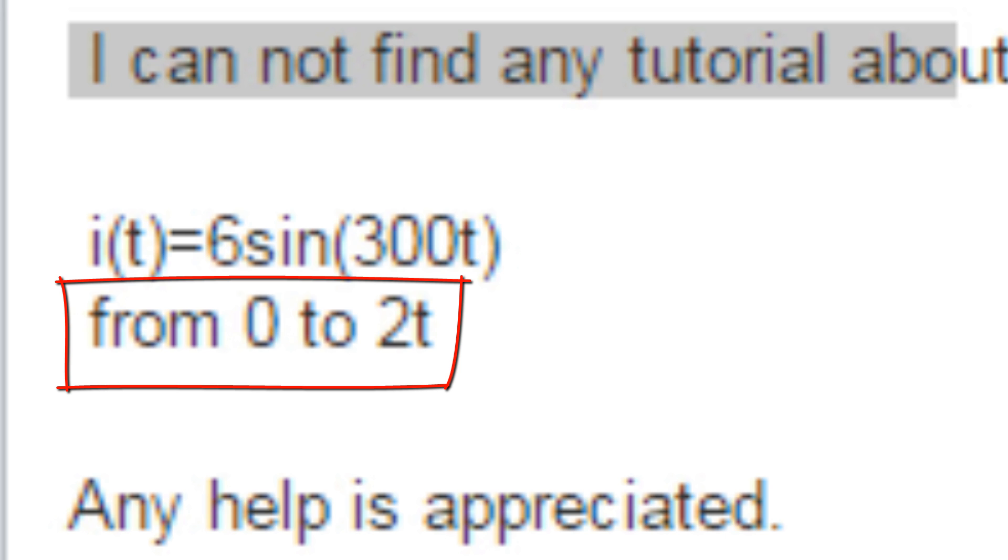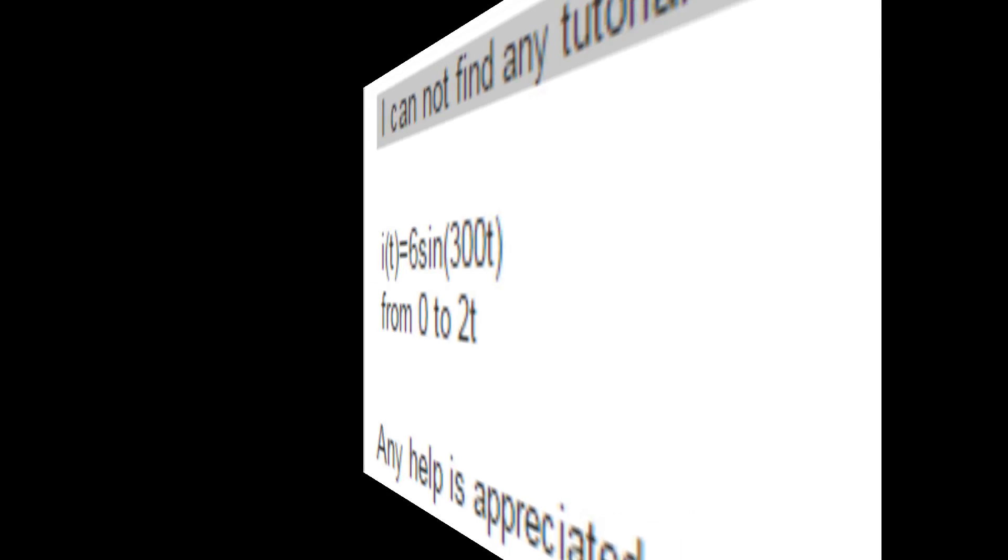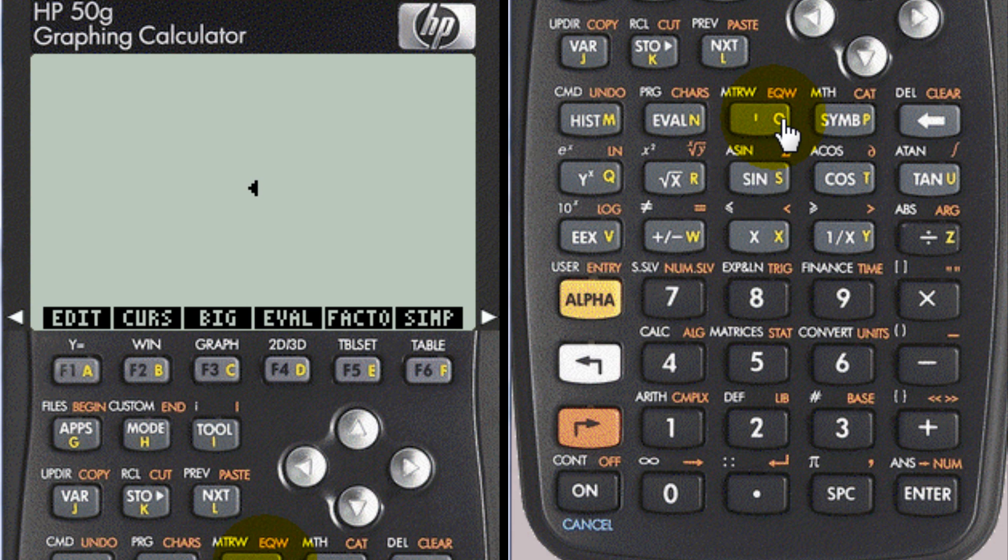Here's a help. I'm assuming that 2t, you mean 2 seconds by that, right? Not 2t. The first thing I'm going to do is enter into the equation writer like so. And once I'm there,